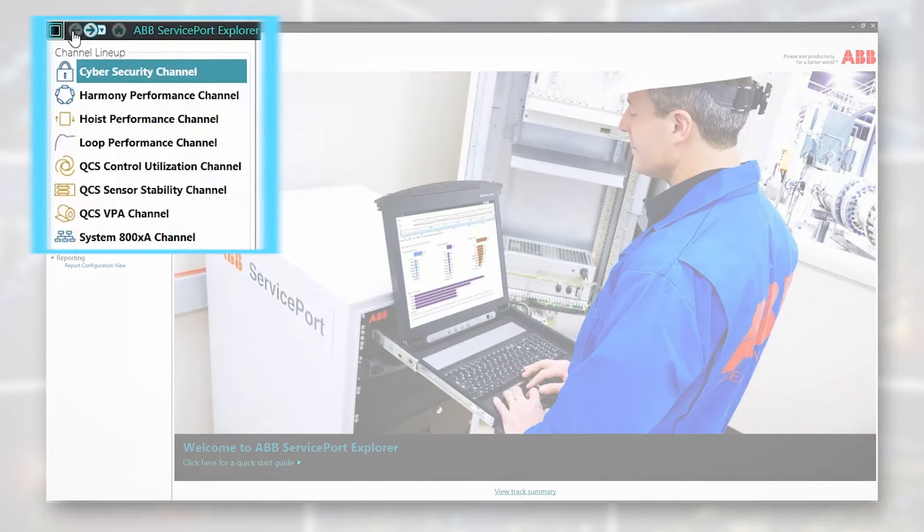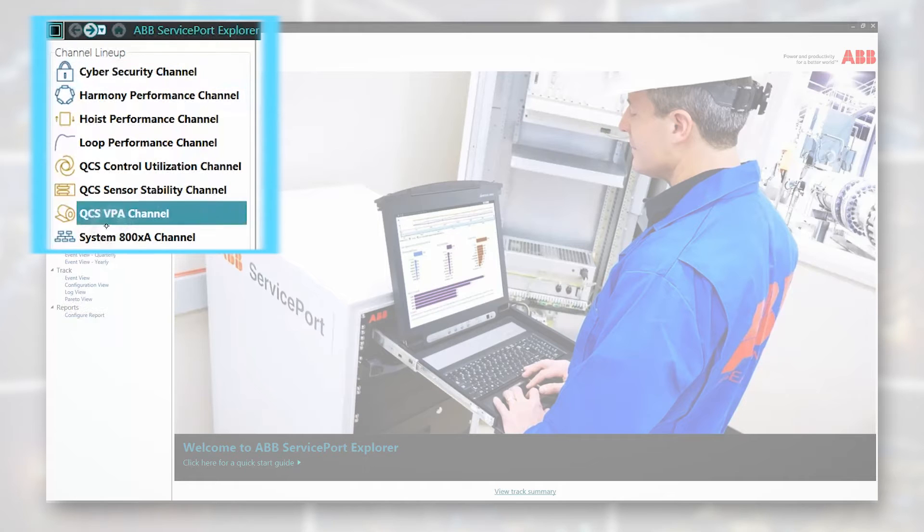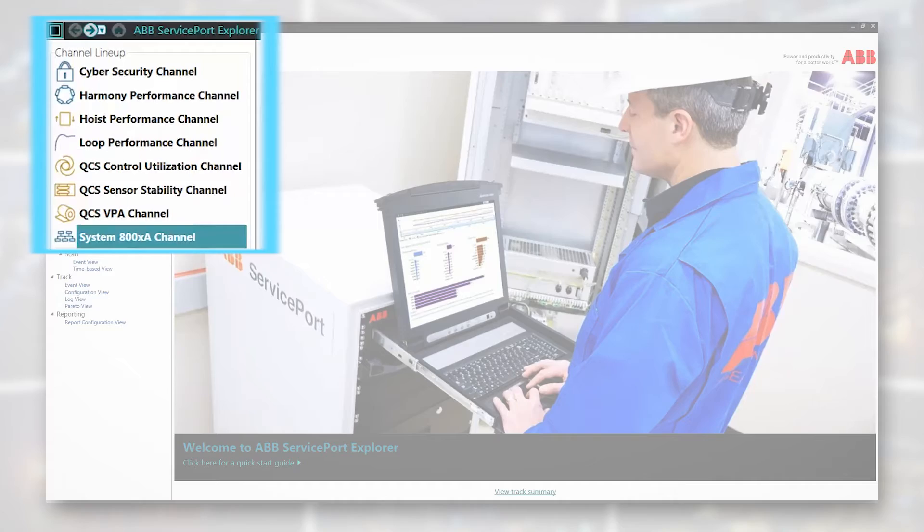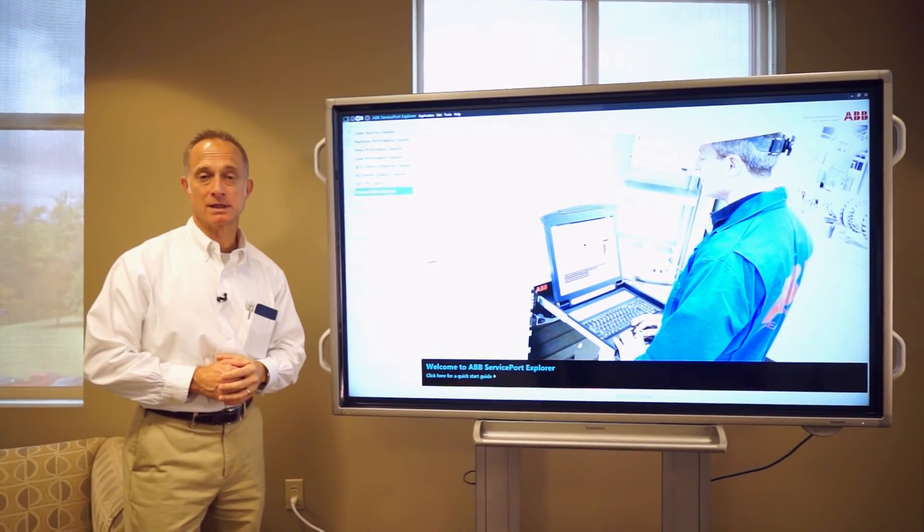One for mine hoist, the hoist performance channel, and also for quality control systems, which is a system that's specific for the pulp and paper industry. For that, we have control utilization, sensor stability, and something called VPA channel, which is variable partition analysis. I won't bore you with the rest of the details on that.